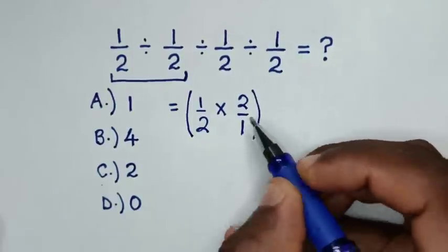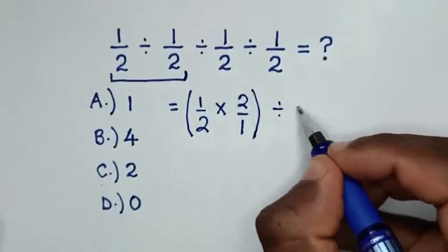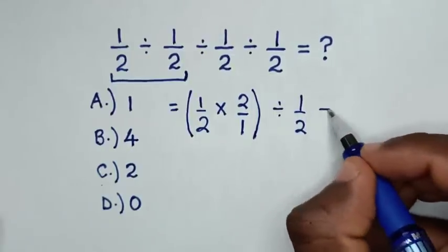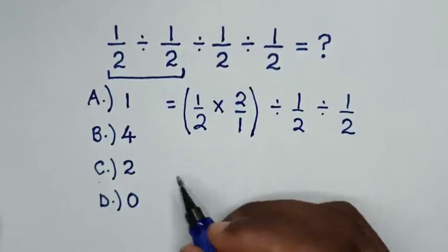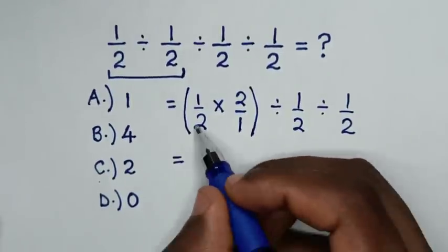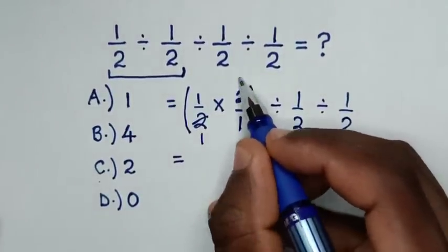÷ 1/2, then ÷ 1/2. Then it will be equal to... to simplify this, cancel by 1 and here by 1.